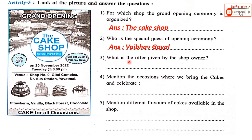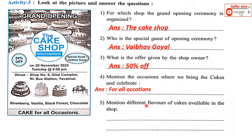Third: what is the offer given by the shop owner? The offer is 50% off. Mention the occasion where we will bring the cakes and celebrate — for all occasions. Mention the different flavors of cakes available in the shop: strawberry, vanilla, black forest, and chocolate flavored cakes are available.